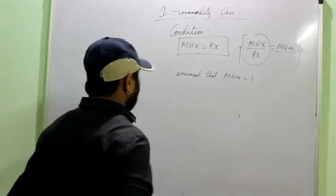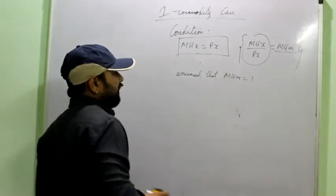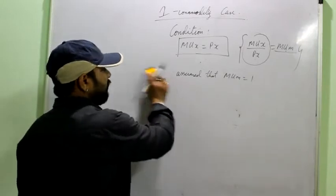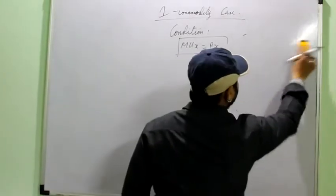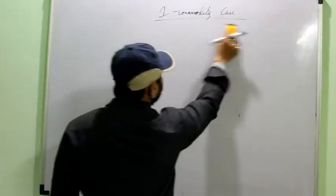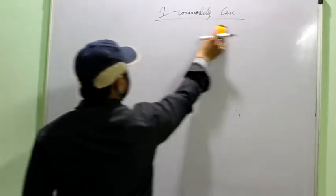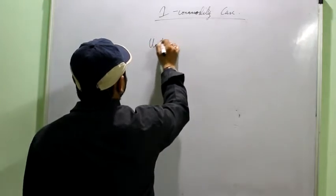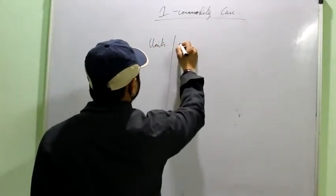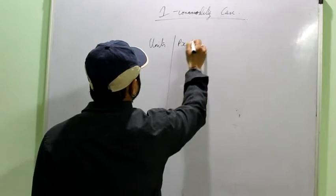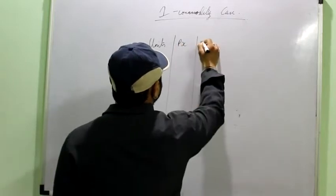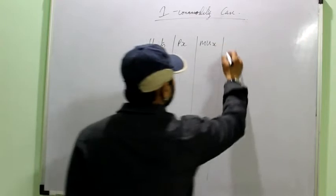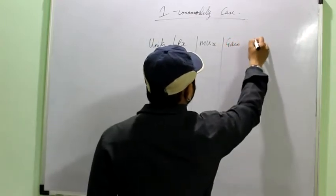So, you have to remember this condition MUx is equal to Px. Now, before moving on to the explanation of this condition, I would like you to have a look at this condition numerically. We will take a numerical example and try to understand how the consumer gain will be maximized if MUx is equal to Px. Take the units.